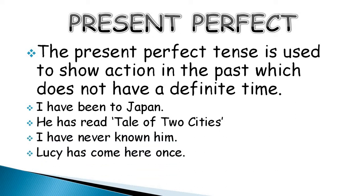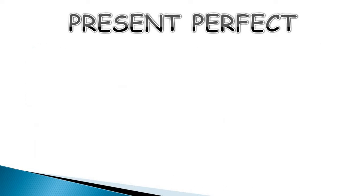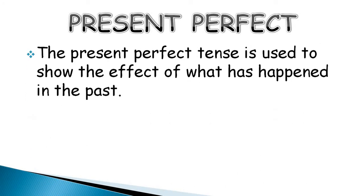The present perfect tense is used to show the effect of what has happened in the past. So there is an action in the past and what is the effect of it - to show that, you use the present perfect tense.